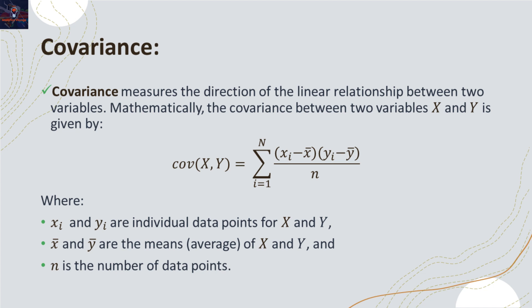Covariance quantifies how two variables change together. In statistics and data analysis, the absolute value of covariance is not typically emphasized or used as a primary measure of the linear relationship between variables.